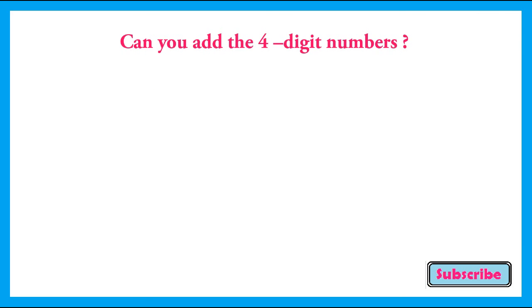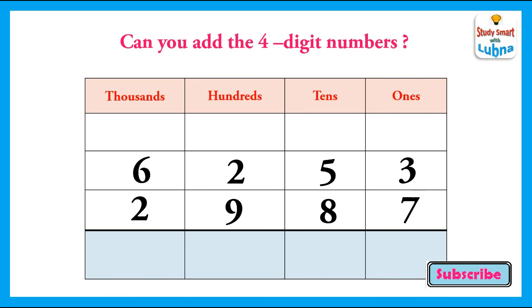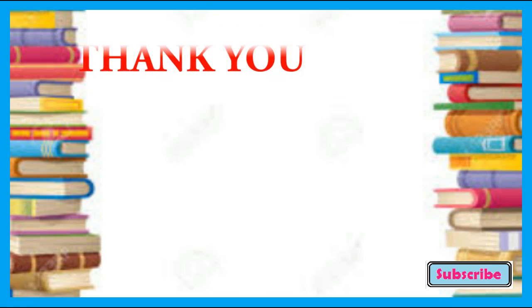Can you add the given 4-digit numbers? Here two 4-digit numbers are given and you have to add them: 6253 and 2987. Good luck and thank you.